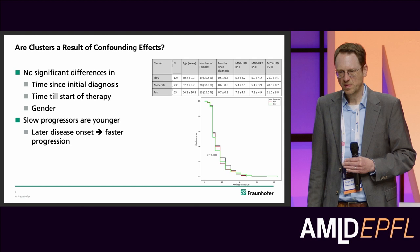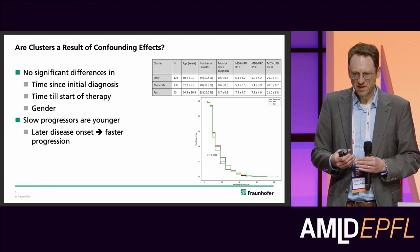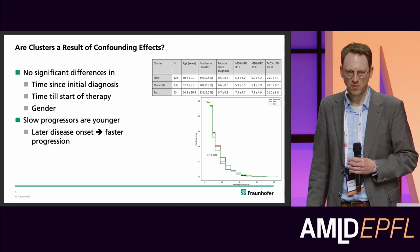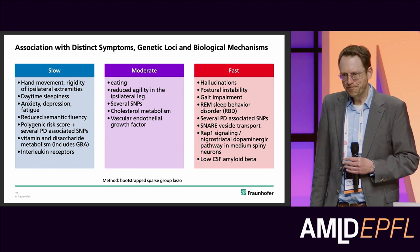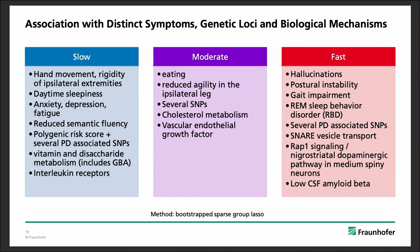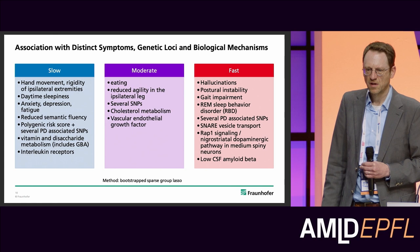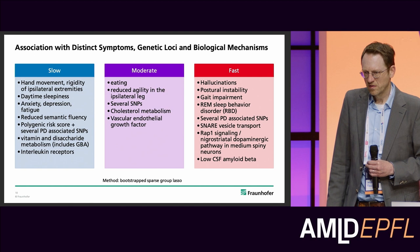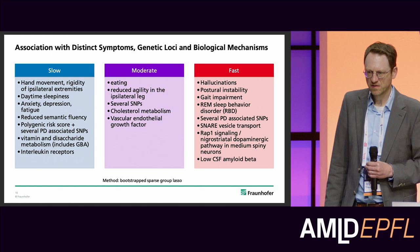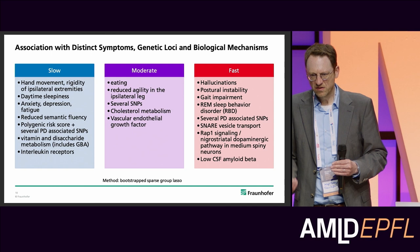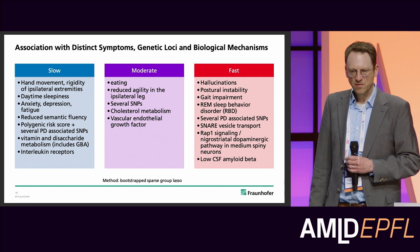We then looked at what baseline parameters — other than those used longitudinally — might be associated to each of the different clusters. We did this by fitting a sparse LASSO in bootstrap, to assess the statistical significance of each parameter. We assessed a number of different modalities: genetic loci, disease symptoms, and biological mechanisms.